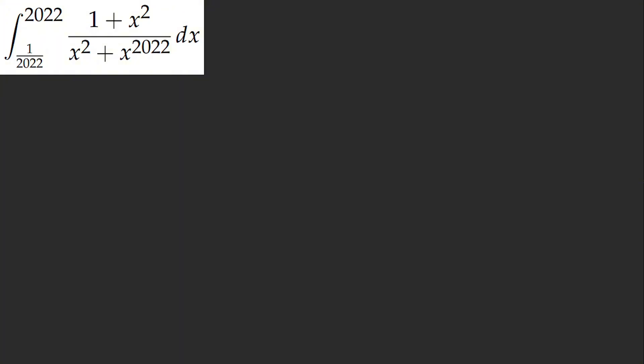We should try letting u equal 1 over x. Just try it. I don't know what else you can do elementary-wise — like, factor this using some undertow technique. I don't know. Maybe there's something cool, right? There has to be a purpose here. So let's go ahead. We do the inversion.